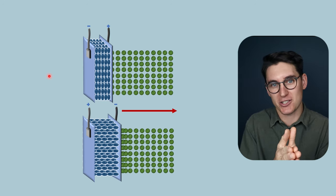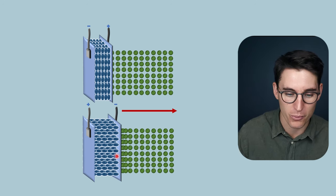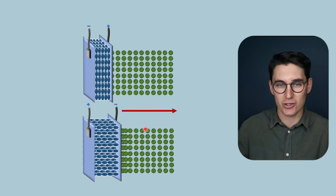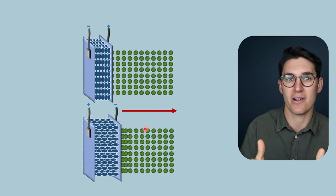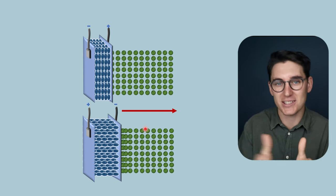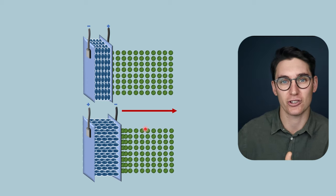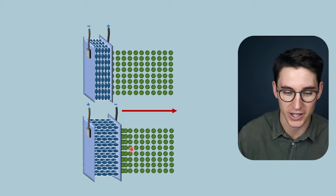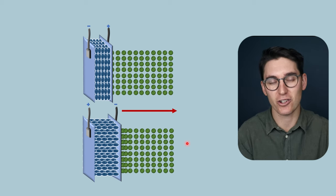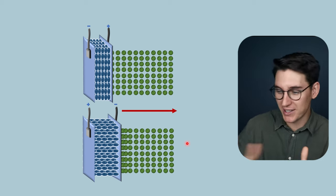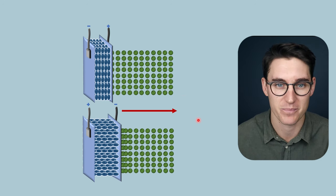As the piezoelectric material expands, we get regions of compression, and as it then returns to its normal shape, it forms a region of rarefaction. It's those alternating regions of compression and rarefaction that result in the propagation of our ultrasound wave into the patient's tissue. The conversion of electric current into mechanical energy is what's known as the reverse piezoelectric effect.